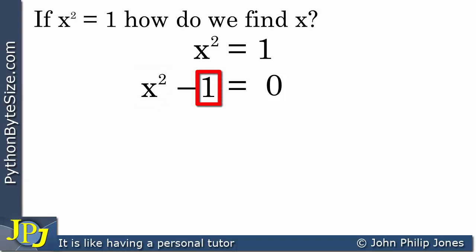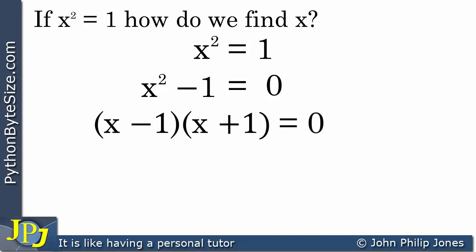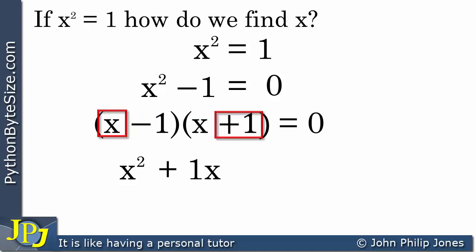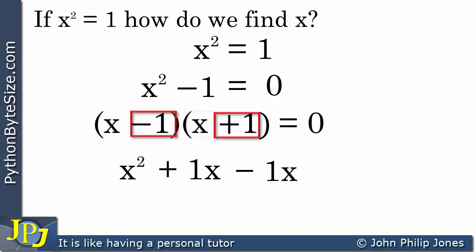The answer is x, because x times x is x squared. How do I get the 1? Well, 1 times 1 gives 1. So I'm going to end up with brackets equaling 0, and I've chosen signs — a minus and a plus. If I expand these brackets, x times x gives x squared, x times plus 1 gives plus 1x, and the other multiplication gives minus 1x.